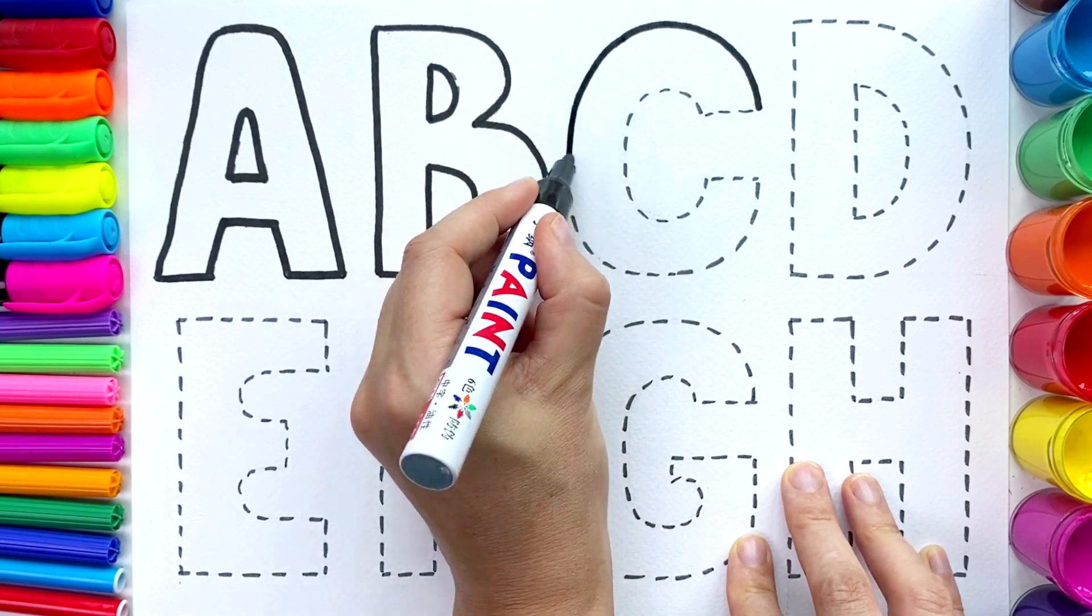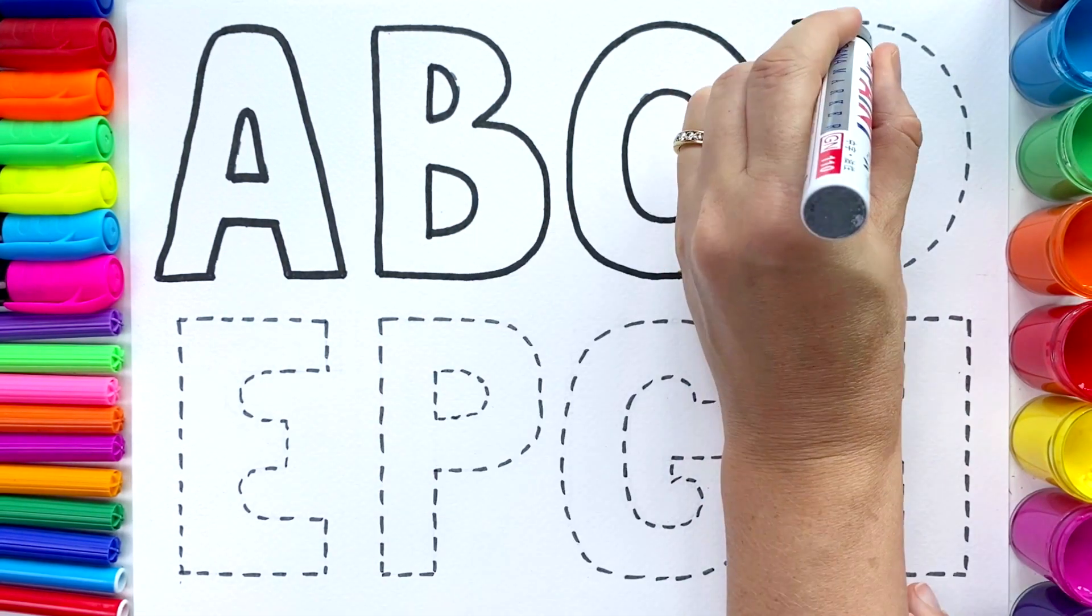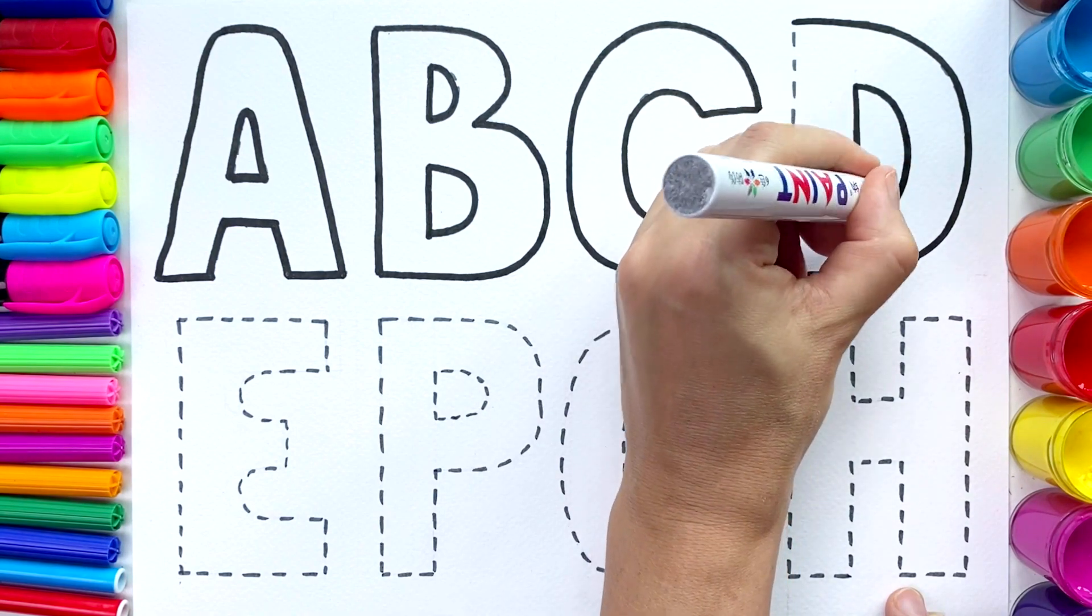Now, we're going to draw the letter C. This is the letter D. Repeat after me. D.